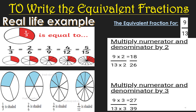Here is a real-life example. The fraction 1/3 is equal to 2/6, which is equal to 3/9, which is equal to 4/12, which is equal to 5/15. The numerator of the first fraction is 1 and the denominator is 3. To get the next fraction 2/6, we multiply both the numerator and denominator by 2.